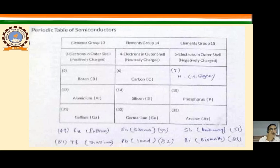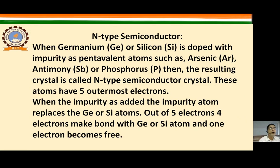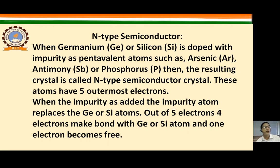This process describes n-type semiconductor. When germanium or silicon is doped with a pentavalent impurity atom — one which has 5 electrons in its outer shell — it forms an n-type semiconductor.